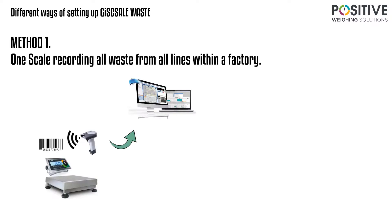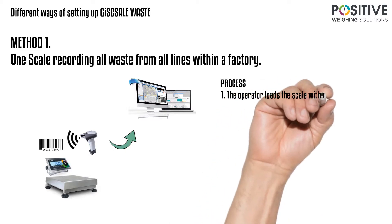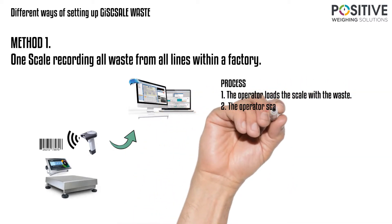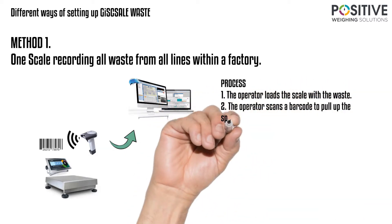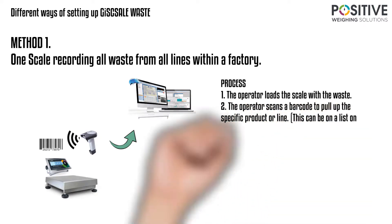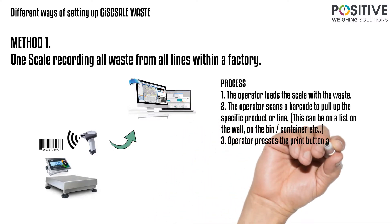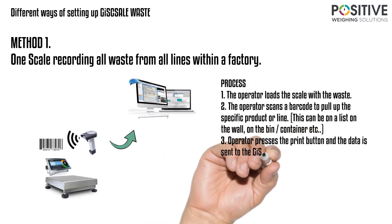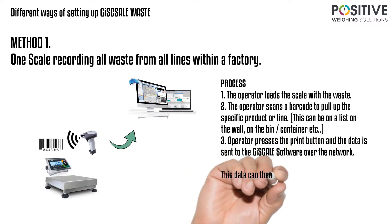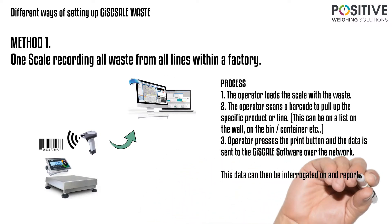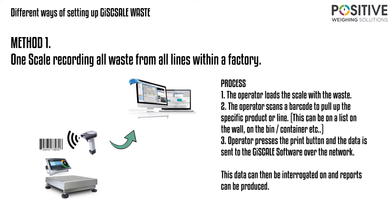For simple installations there are two different ways of setting up the G-Scale waste software. Method one: one scale recording all waste from all lines within a factory. Step one, the operator loads the scale with the waste. Step two, the operator scans a barcode to pull up the specific line or product — this can be a barcode list on a wall or on the bin or container. Step three, the operator presses the print button and the data is sent to the G-Scale software over the network. This data can now be interrogated and reports can be produced.